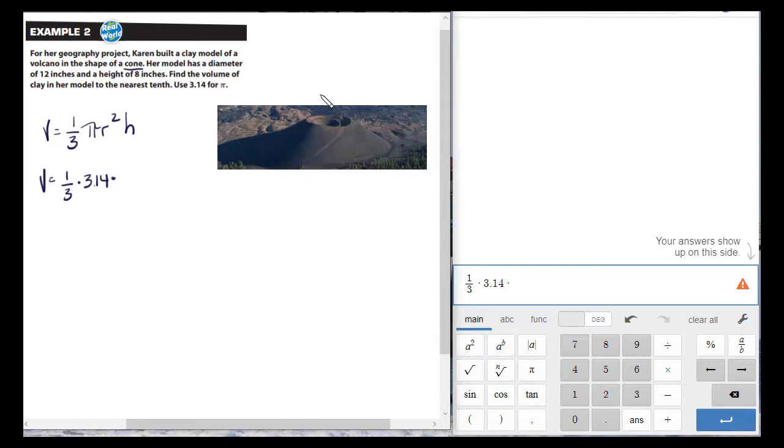But I do need the radius squared, and it tells me that her model has a diameter. Uh-oh, the diameter, that's going to be the distance all the way across the base. The diameter of the model is 12 inches, so the radius is half that. So the radius is 6 inches, and it's squared, and it tells me the height is 8.